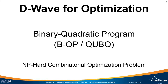One of the views of the D-Wave computer is as an optimization tool for solving binary quadratic programs, which are often called BQPs or QBOs in the literature. These are NP-hard combinatorial optimization problems, which makes them quite interesting from both a scientific and computational perspective.